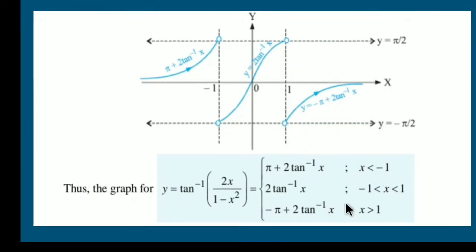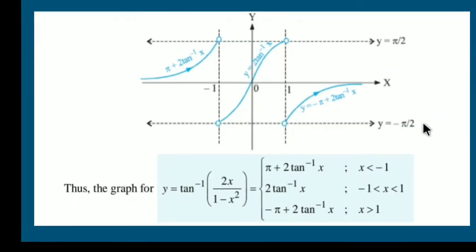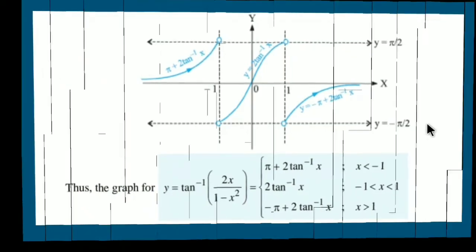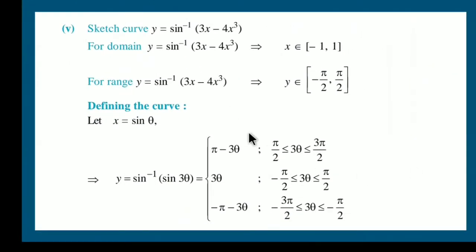Question 4 — tan⁻¹((3x−x³)/(1−3x²)) — follows the same pattern. I'm skipping it and you can try it yourself. Let's jump directly to question 5.